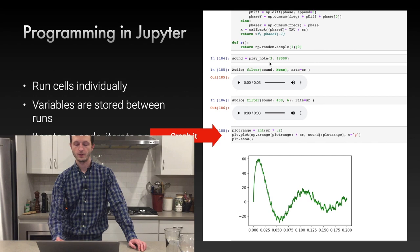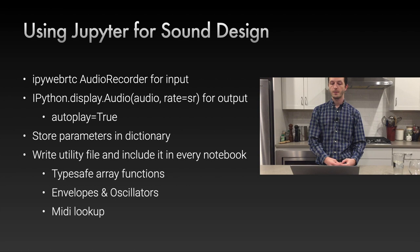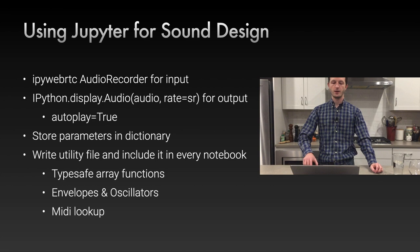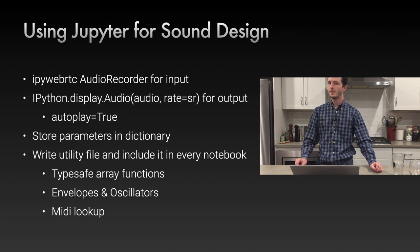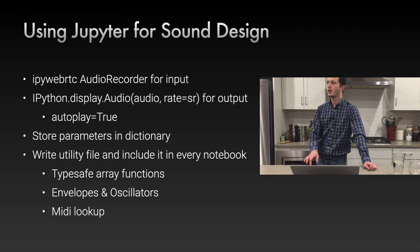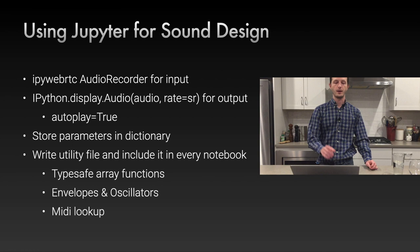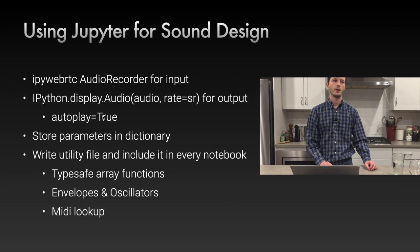For sound design in Jupyter, use IPyWebRTC and IPython.display.Audio for input and output. One tip: set autoplay to True — it gives a faster iterative development time by saving the seconds it takes to click play. It also helps if you have a long-running function and want to do something else: the autoplay on your output will give you an audio notification when it's done.